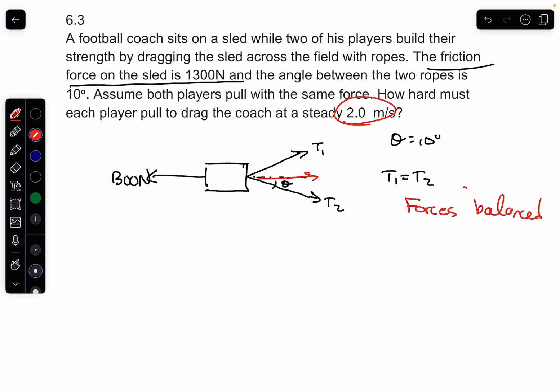So I can say 1300 is equal to 2Tx, because it needs to only be in the x direction. These guys are pulling equally and opposite and they're balanced in the y.